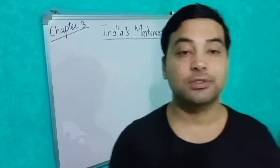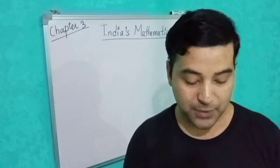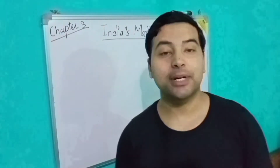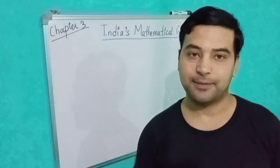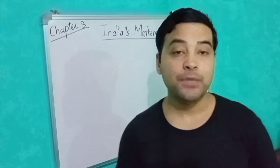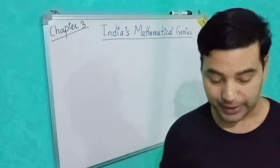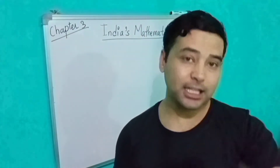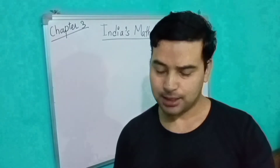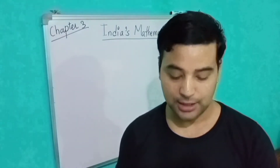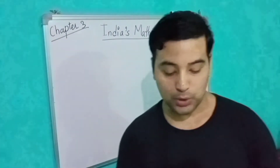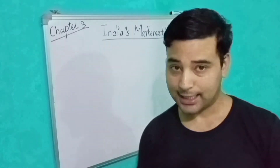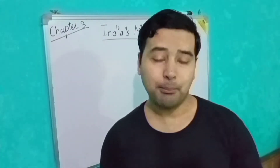Hello students of class 5. Check out the English evoke book. You know that I have completed chapter number 3, India's Mathematical Genius. I have explained chapter number 3 to you in this section. You can see the videos on YouTube, chapter number 3, where I have clearly explained what I have done.